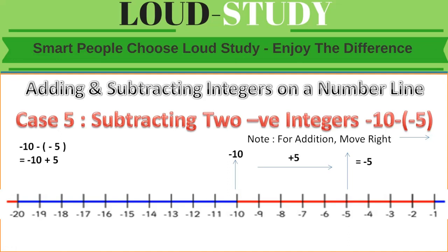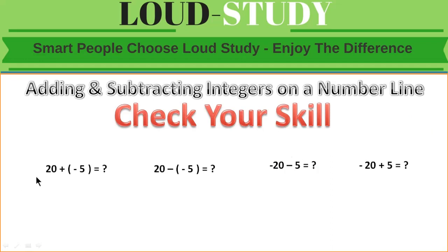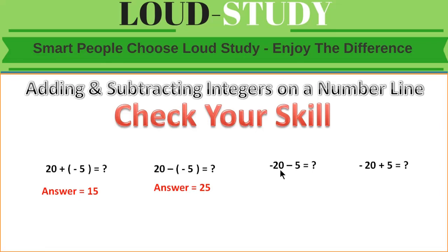Let's check your skill. If 20 plus minus 5 — the answer is 15, because plus minus means minus, so 20 minus 5 equals 15. For 20 minus minus 5: minus times minus gives plus, so 20 plus 5 equals 25. For minus 20 minus 5: the answer is minus 25. And minus 20 plus 5 gives minus 15.